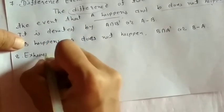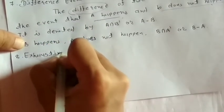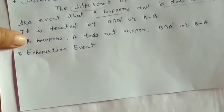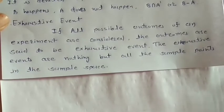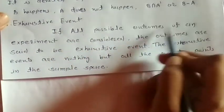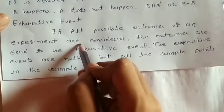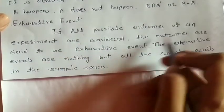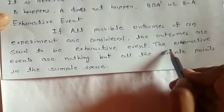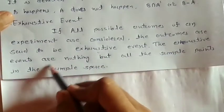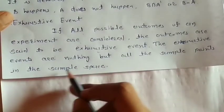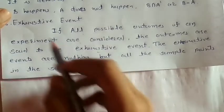Number 8: Exhaustive event. What is an exhaustive event? If all possible outcomes of an experiment are considered, the outcomes are said to be exhaustive events. The exhaustive events are nothing but all the sample points in the sample space.